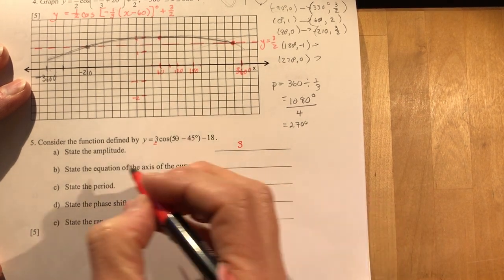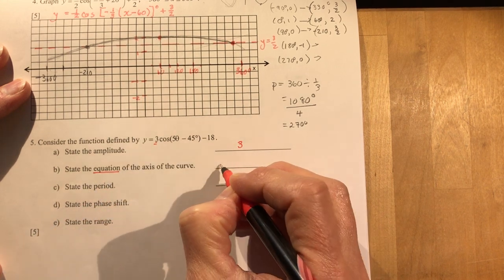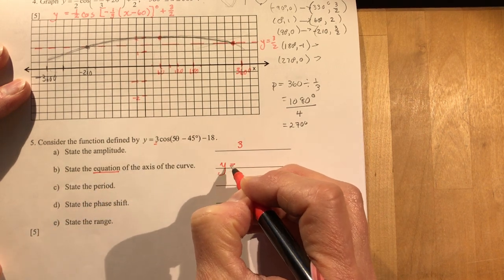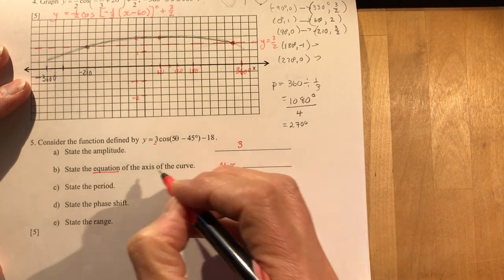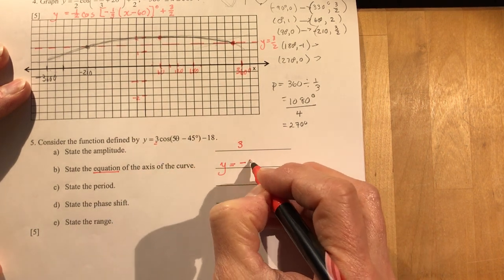State the equation of the axis. If a teacher asks you for an equation, you give an equation. You don't say negative 18. That's not an equation. That's just a value. So the equation is y equals negative 18.